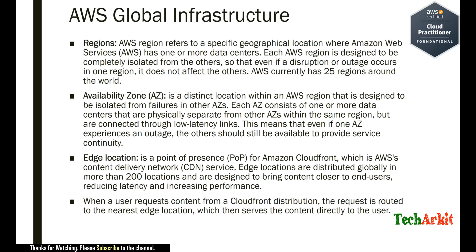An availability zone is a distinct location within an AWS region that is designed to be isolated from failures in other availability zones. Within a region there are multiple availability zones, and each availability zone can consist of one or more data centers that are physically separate from other availability zones within the same region, but are connected through low latency links.